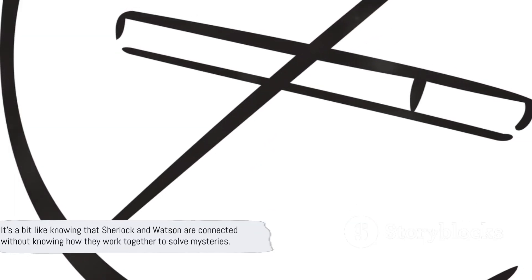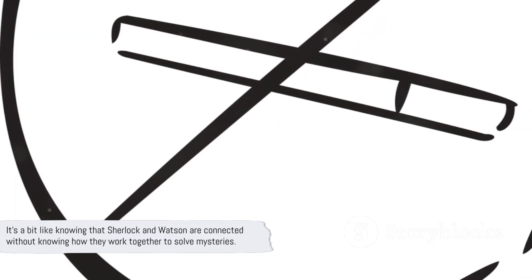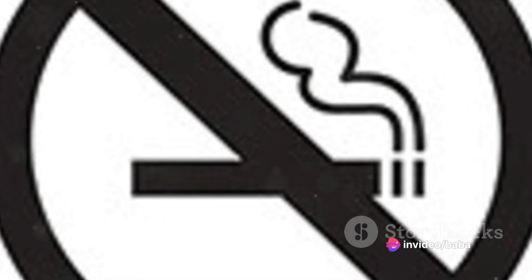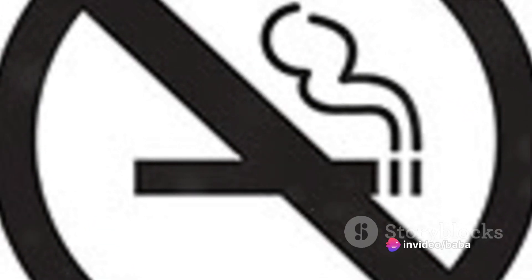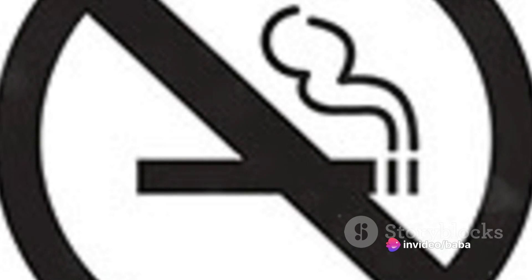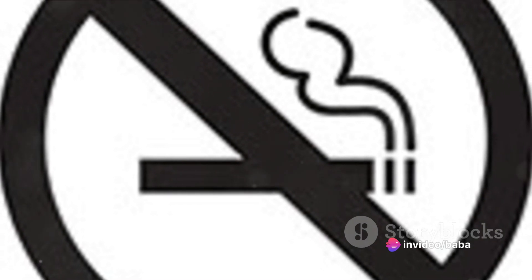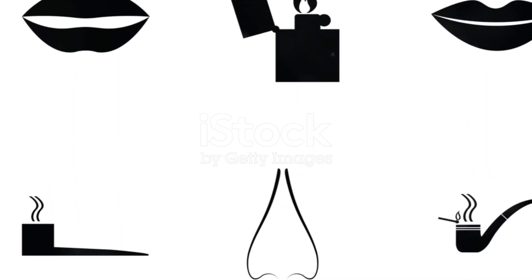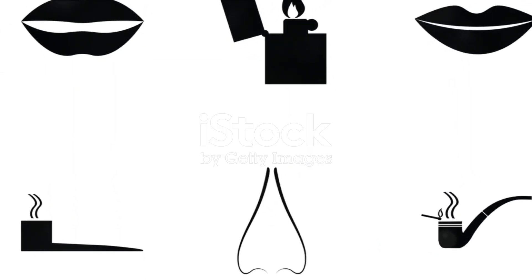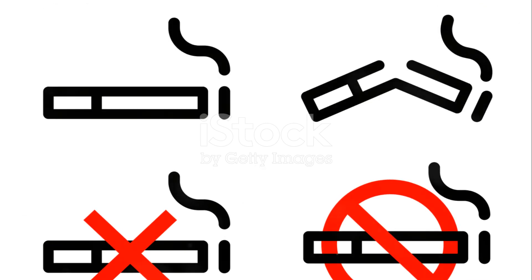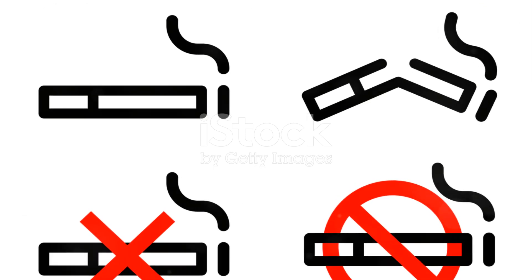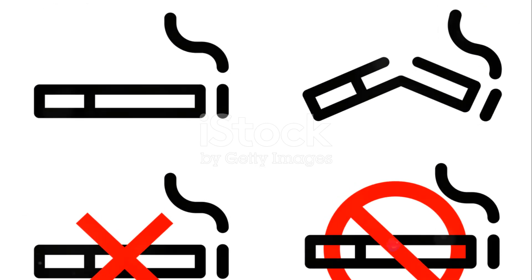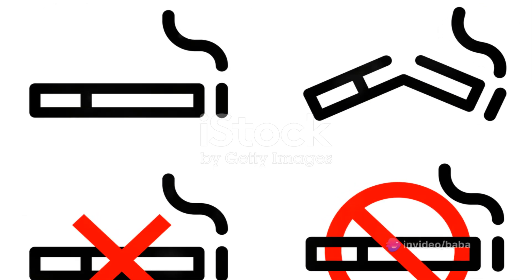However, it's crucial to remember that the Chi-Square Test only reveals if there's a relationship between the variables. It doesn't tell us about the nature or strength of this relationship. It's a bit like knowing that Sherlock and Watson are connected without knowing how they work together to solve mysteries.